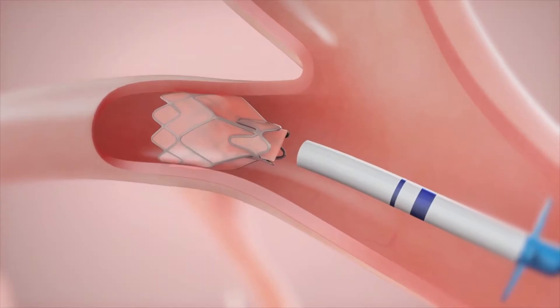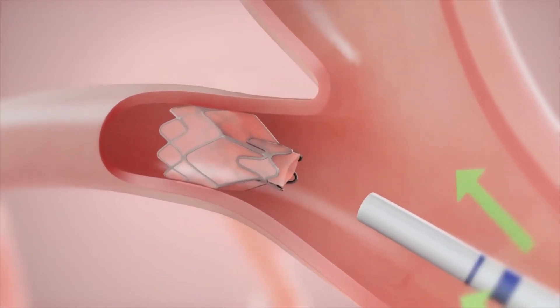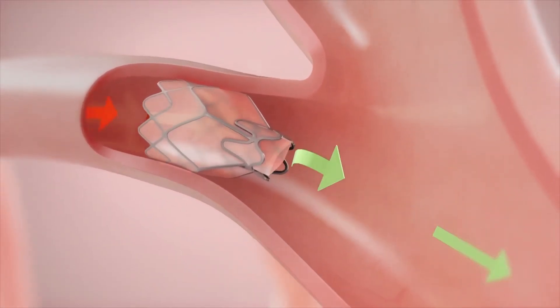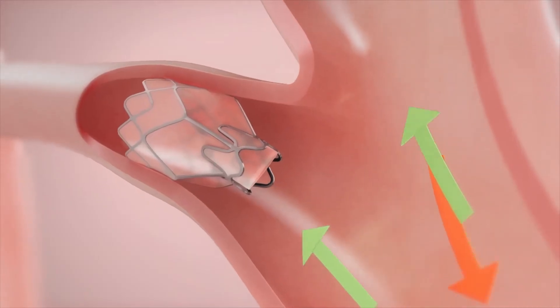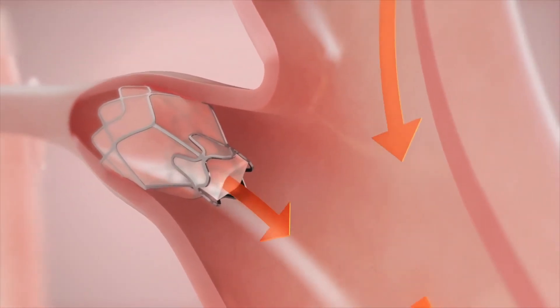Multiple valves are implanted to ensure complete occlusion of all airways leading to the target lobe of the lung. Valves may be placed at the lobar, segmental, or subsegmental levels.